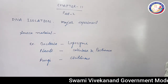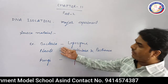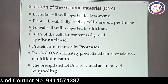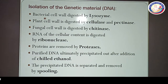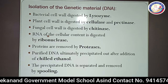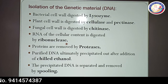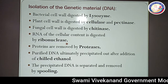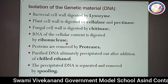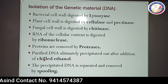So, the important enzymes required for degradation of the cell wall of bacteria, plant, or fungi are: lysozyme, cellulase, pectinase, and chitinase. RNA present in the cellular content is also digested using ribonuclease enzyme, also known as RNase. The proteins present can be removed using protease enzymes. Purified DNA is ultimately precipitated out after the addition of chilled ethanol.